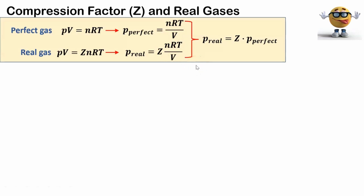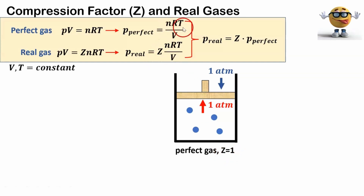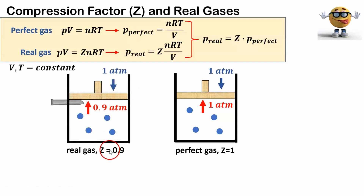We're going to look at two scenarios. The first is under constant volume and temperature. Imagine we have a gas in a container fitted with a piston, in equilibrium with the same pressure, one ATM, on the inside as on the outside. For a perfect gas, the compression factor Z equals 1, which gives NRT over V. If Z is less than 1, say 0.9, then the pressure is going to be less. If Z is 0.9 and the perfect gas has a pressure of 1 ATM, then the pressure of a real gas would be 0.9 ATM. We have different pressures inside and outside, so we have to hold the piston so that it doesn't go down.